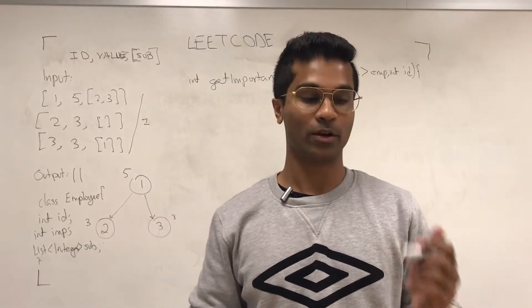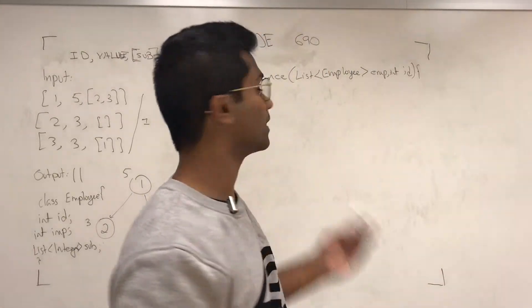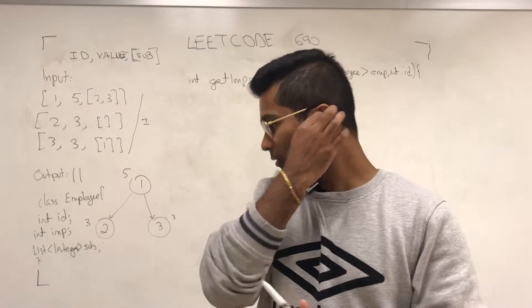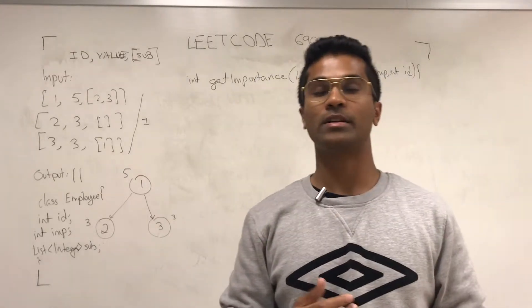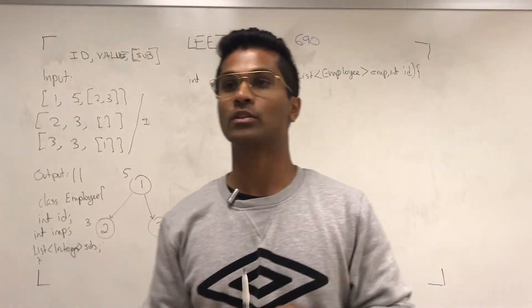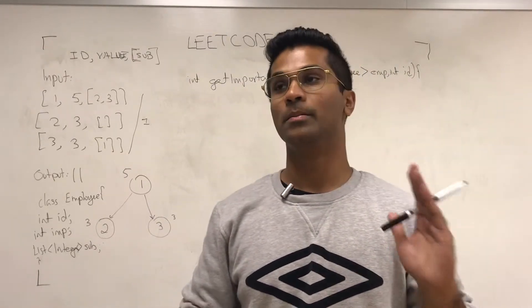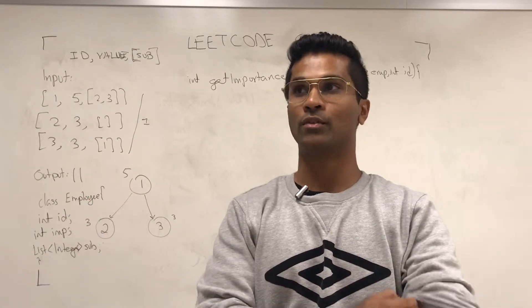What's up everyone? Today we're going to be going over LeetCode 690, Employee Importance. I'm not sure why there were so many downvotes for this one, but this is a pretty standard BFS graph traversal.